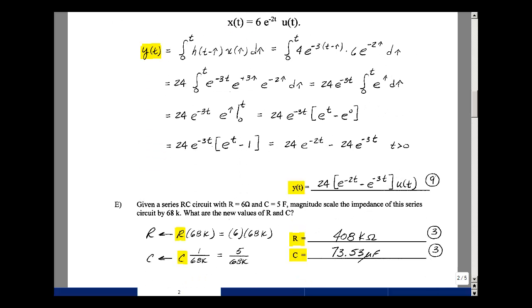I could write this as y(t) equals 24(e^(-2t) - e^(-3t)), all times u(t).